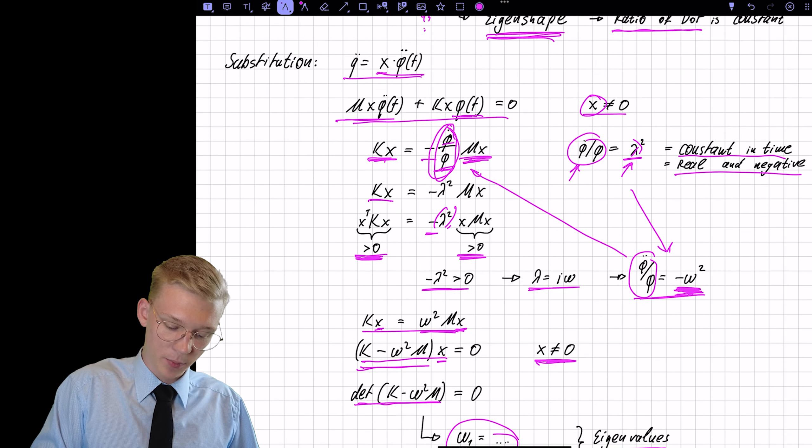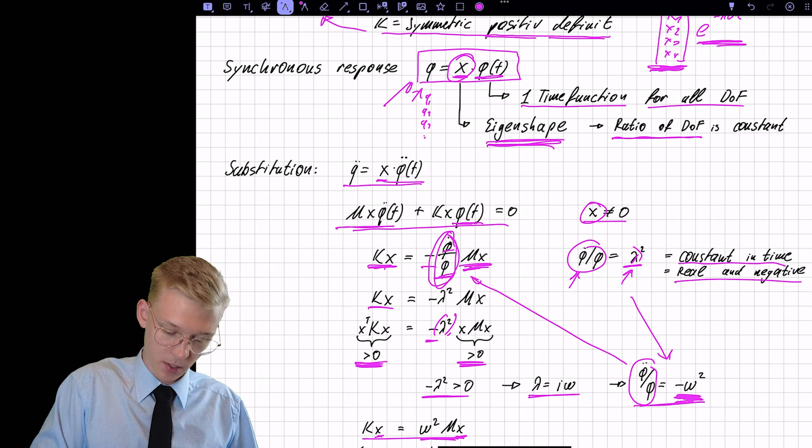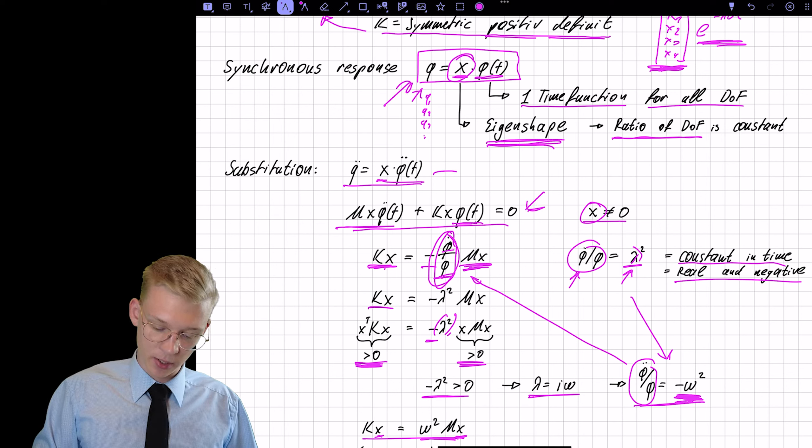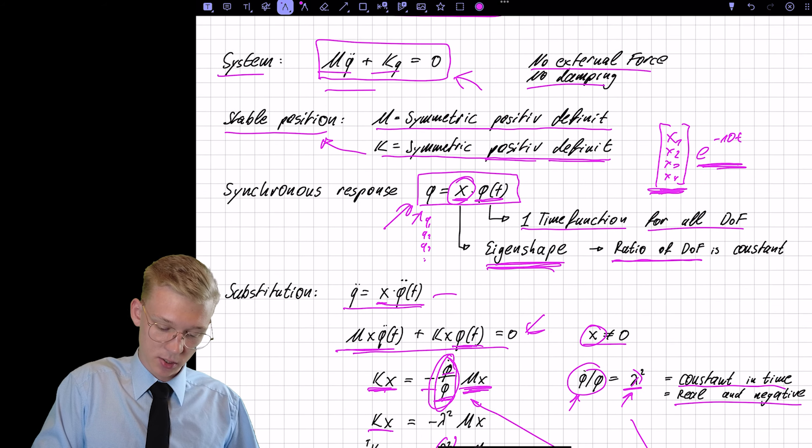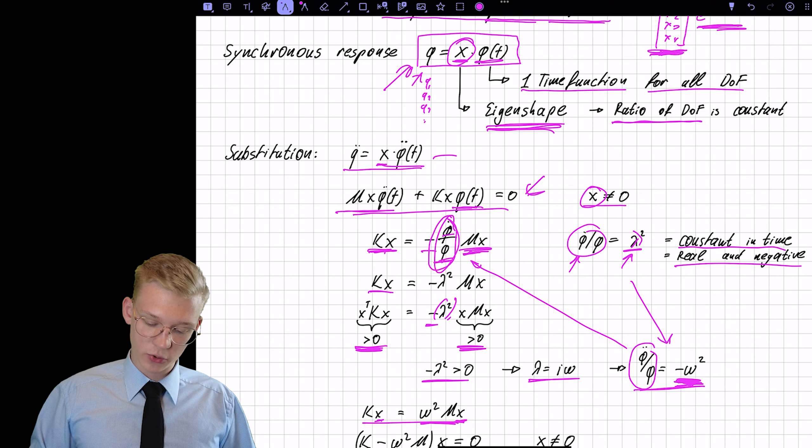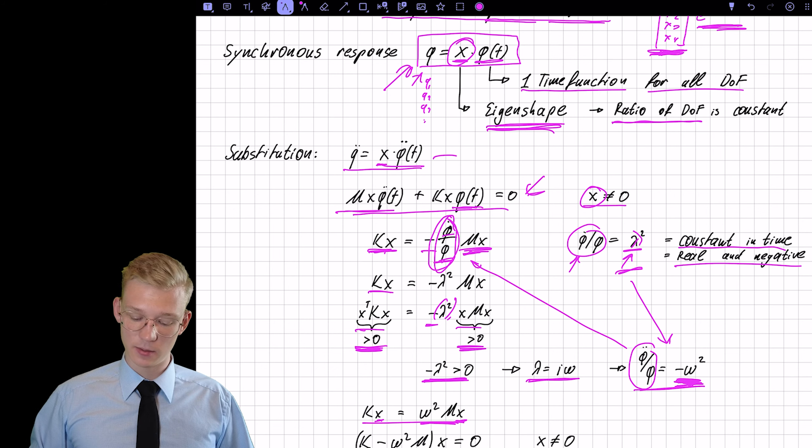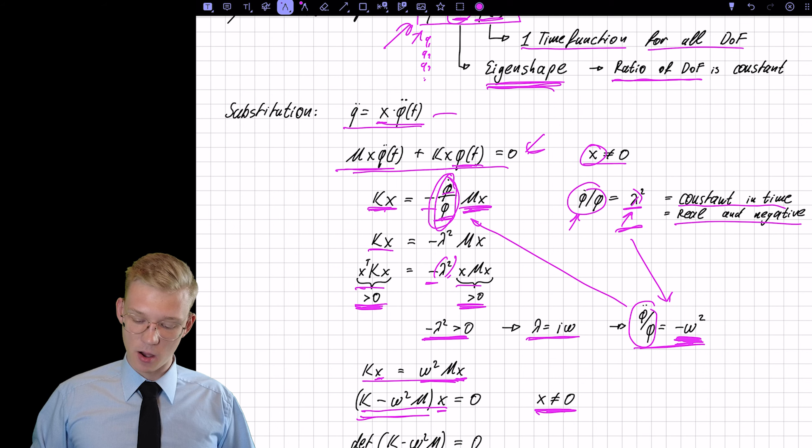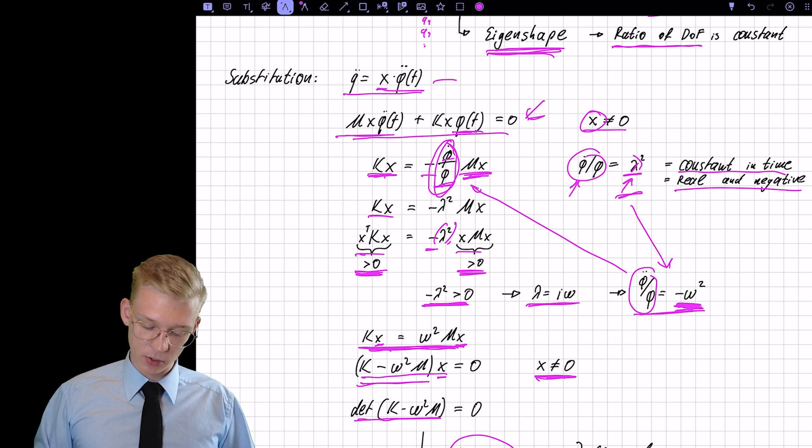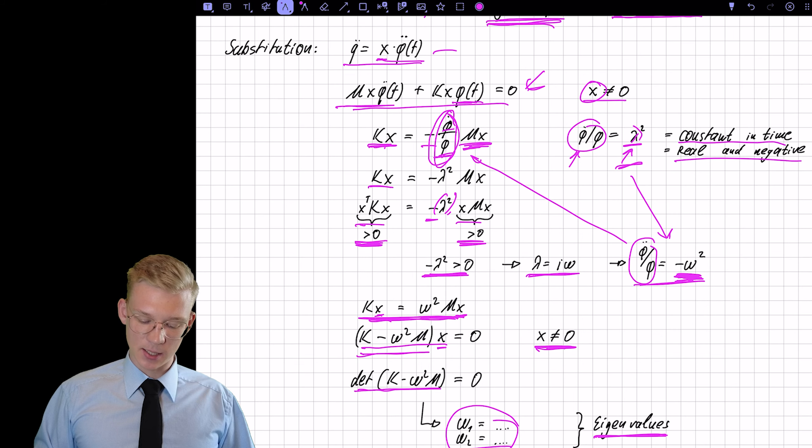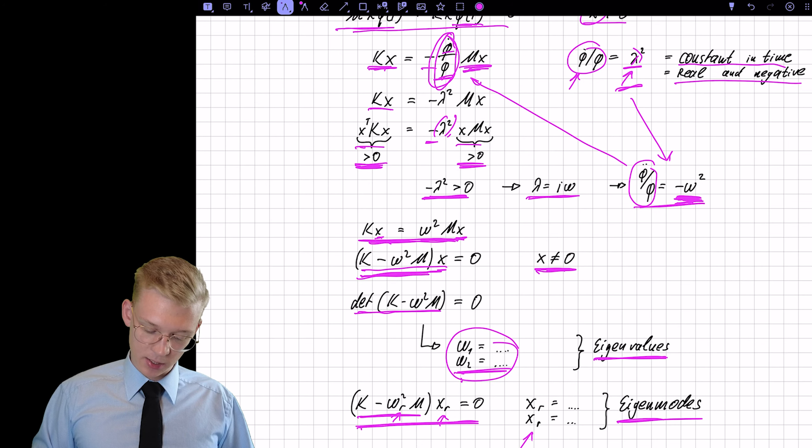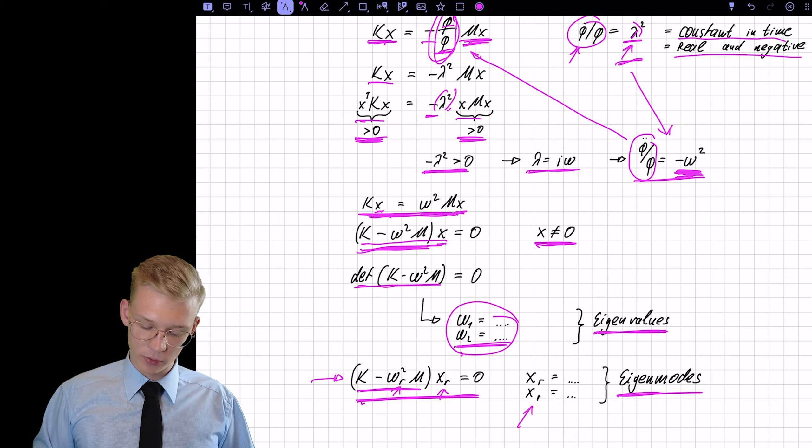So let's summarize again. We proposed a solution, this one, we derived it twice, inserted it in our linearized equations of motion. Then we introduced a new constant that is lambda, we pre-multiplied x and showed that lambda has to be, minus lambda squared has to be larger than 0. This means lambda is imaginary. Then we got a omega. We inserted this omega back into the equations, set omega in such a way that the determinant is 0 and then inserted this omega back into the equation and found our eigenmodes.